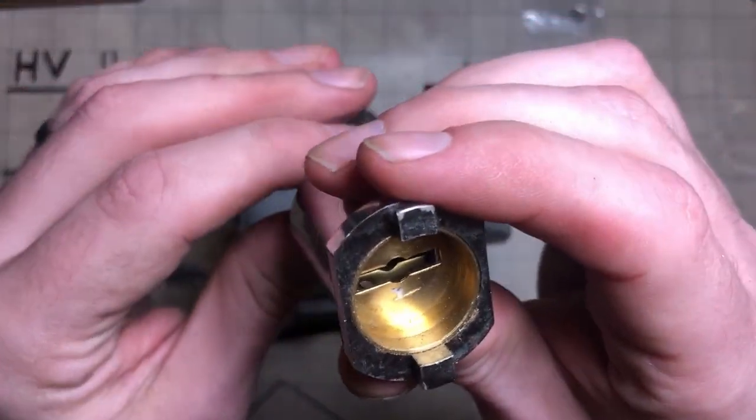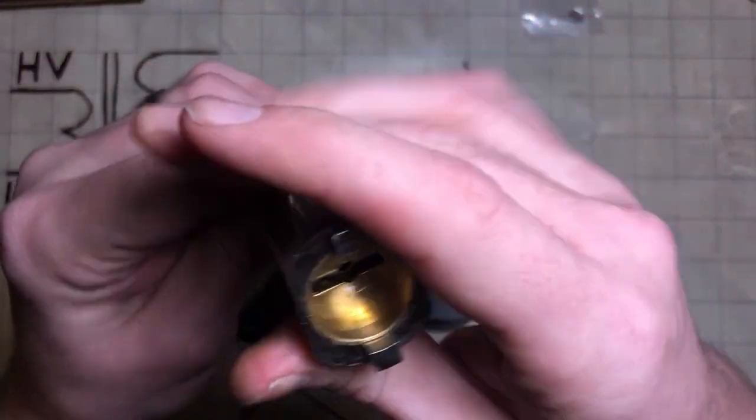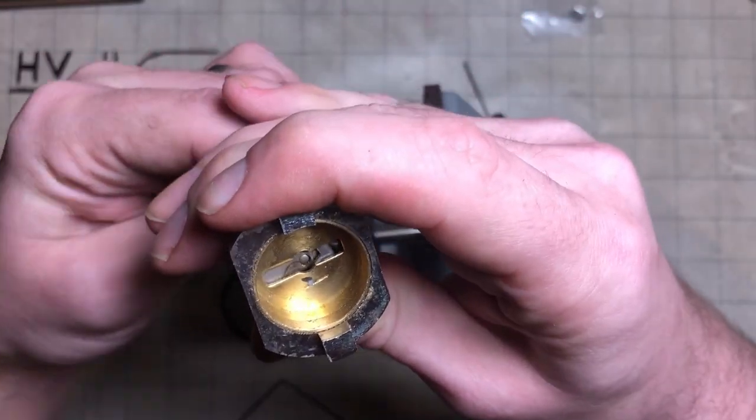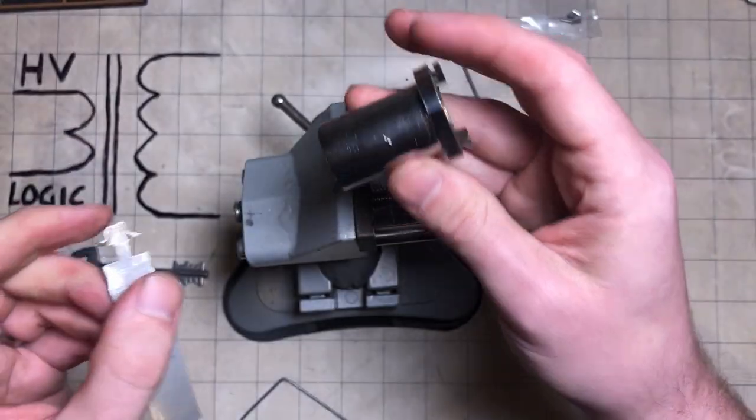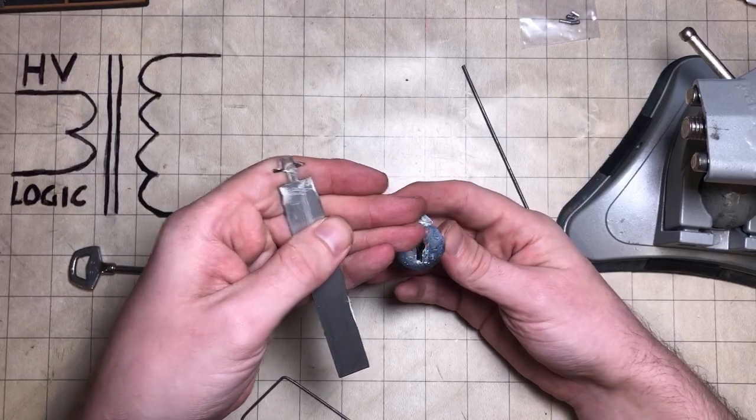And let's lock it back up again. Okay, so there you go, that is a Denny warded lock picked using a slightly bodged handmade tool here.